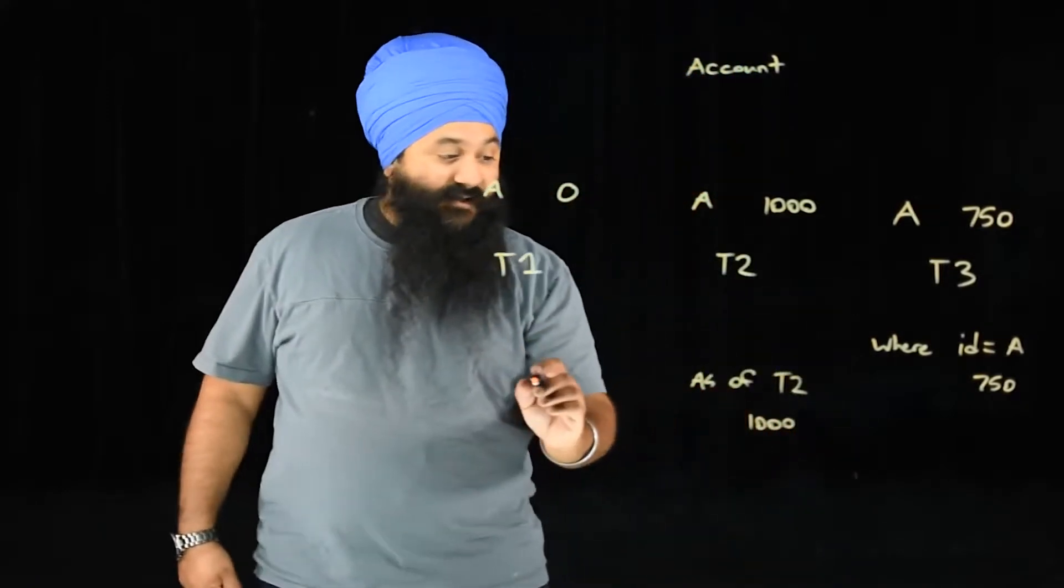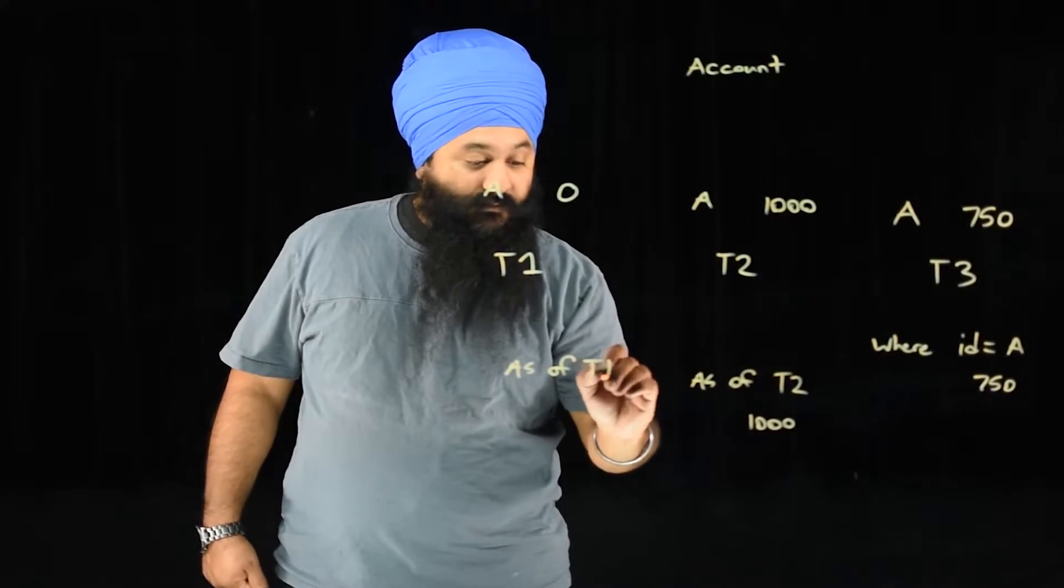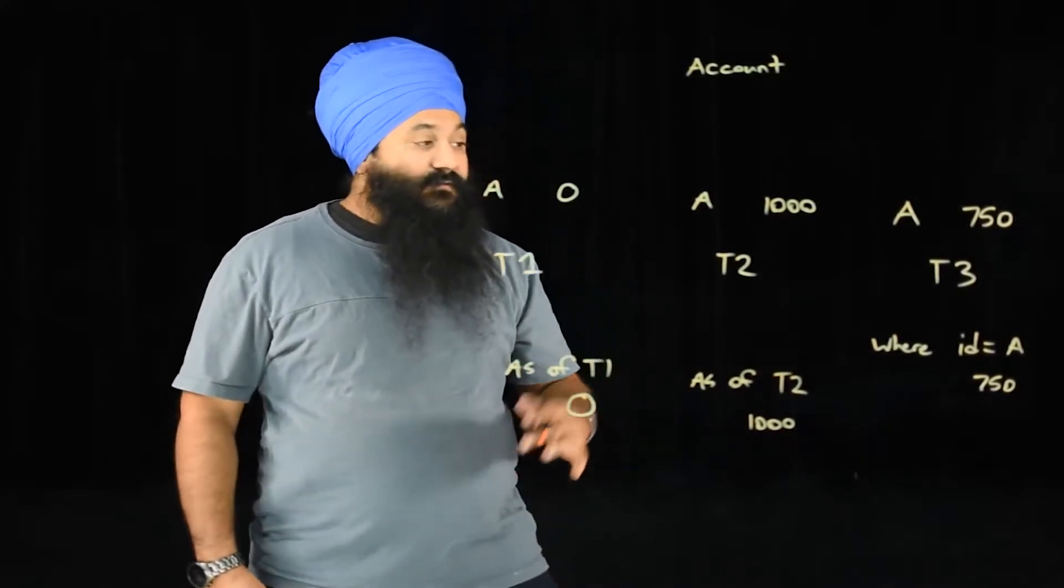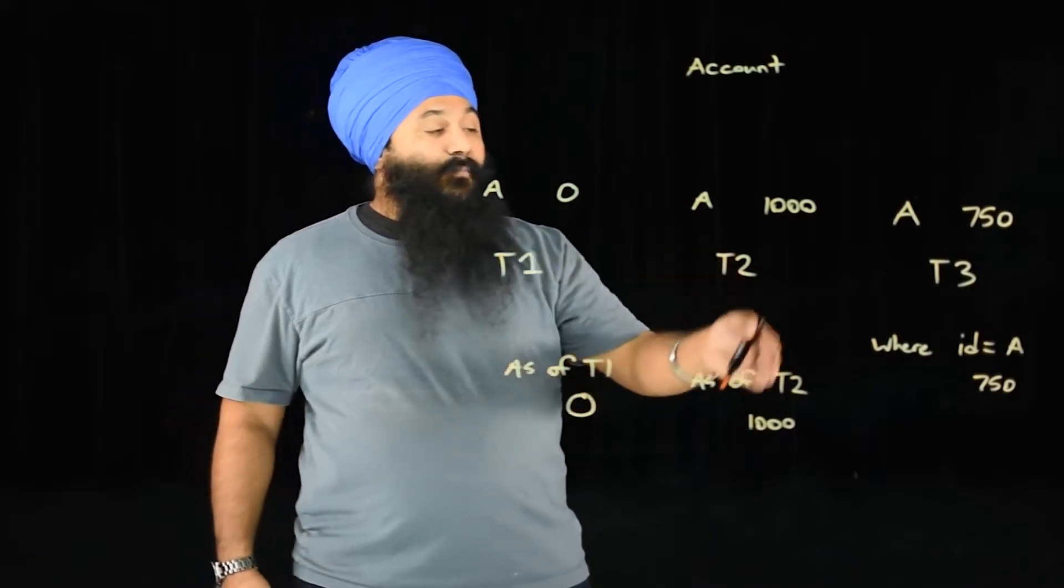But what we can do now is we can say as of T2 and now we'll get back $1,000, or we can say as of T1 and get back zero. So this is a really cool feature where we can see what the table was like at different points in time.